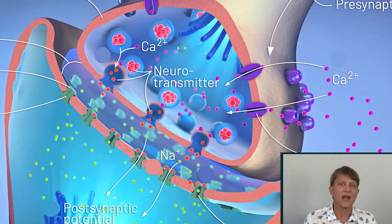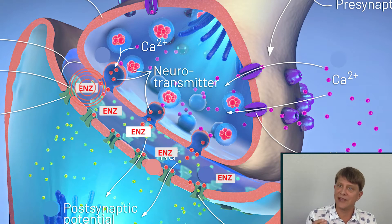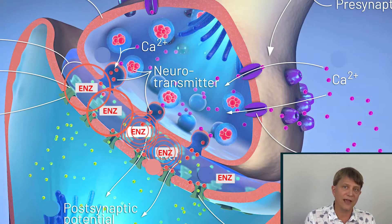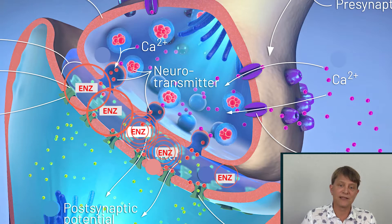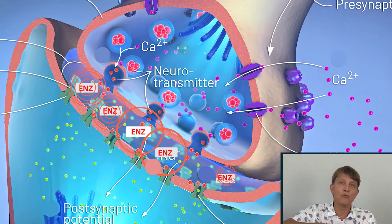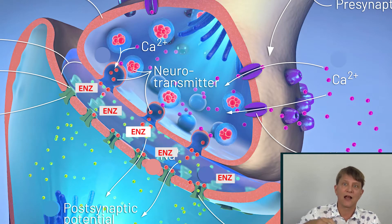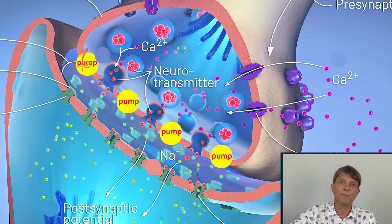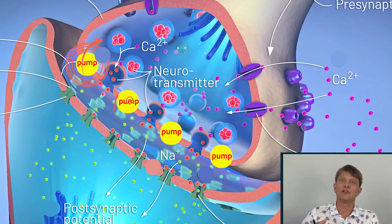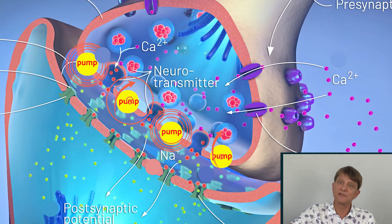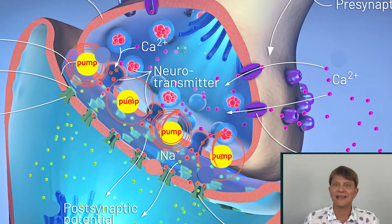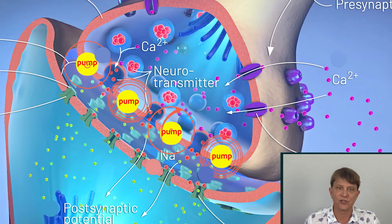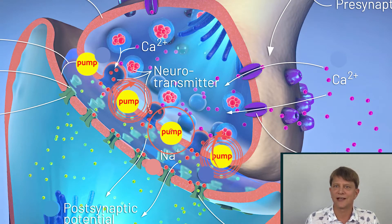So how do we degrade the neurotransmitter in the synaptic cleft? Two ways: we have an enzyme present that can degrade it very quickly, and a second mechanism is a reuptake pump that pulls the neurotransmitters back into the first neuron. All of that happens within a few milliseconds.